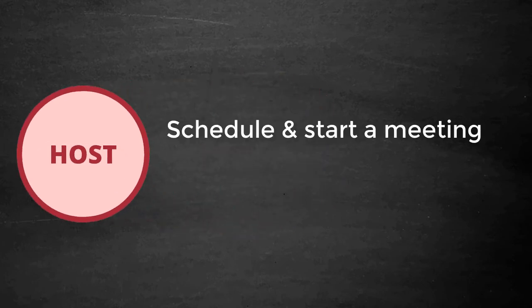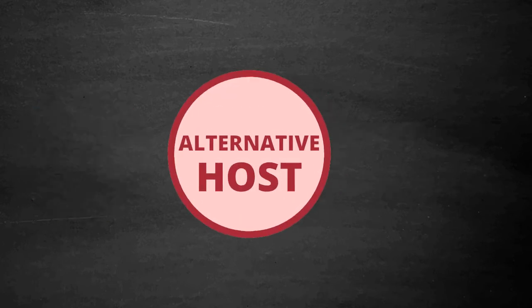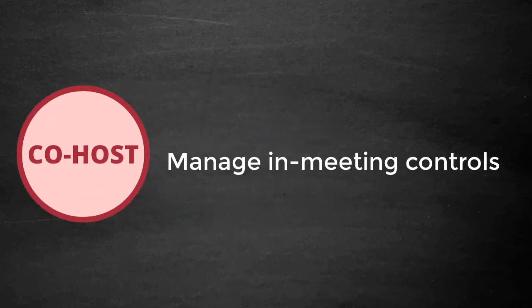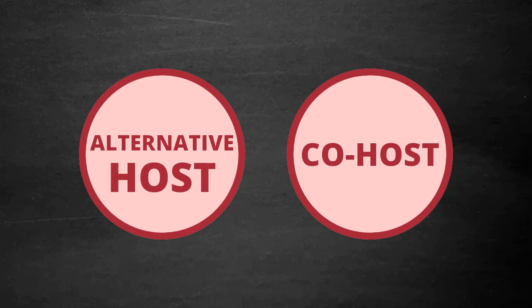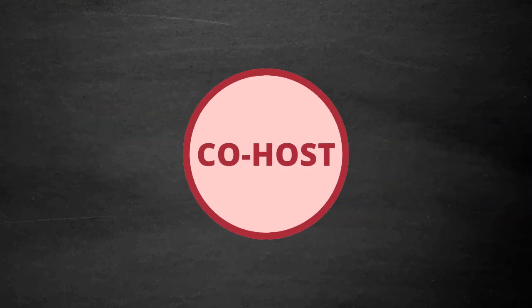Let's recap. A host has full permission to schedule and start meetings, as well as manage in-meeting controls. An alternative host can start a meeting and has the same in-meeting controls as the host. A co-host only has the same in-meeting controls as the host; co-hosts cannot start or schedule meetings in advance. The main question in deciding whether to assign a user alternative host or co-host is: do you need this user to start the meeting for you? If so, assign them alternative host prior to the start of the meeting. Otherwise, if you plan to be in the meeting along with this user, you only then need to assign them co-host during the meeting itself.